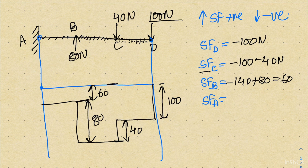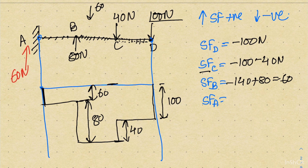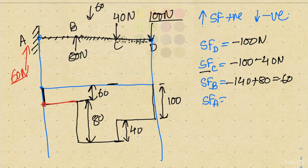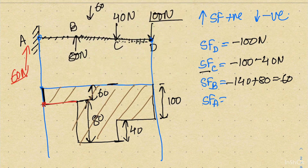When you reach the end, you can close the diagram. The reaction equals the algebraic sum of all loads. We have 100 and 40 downward minus 80 upward, giving a net downward load of 60 newton, so the reaction is 60 newton upward. The shear force at A is minus 60, and the reaction is 60 upward — these match and close the diagram to zero. This confirms your result. I hope with this second example you now understand how to make the shear force diagram for a cantilever beam with multiple loads.